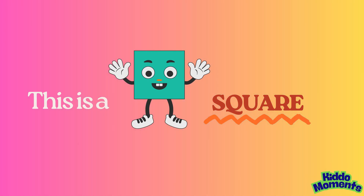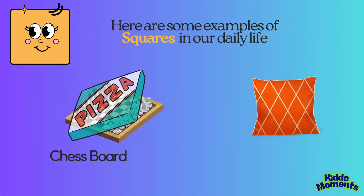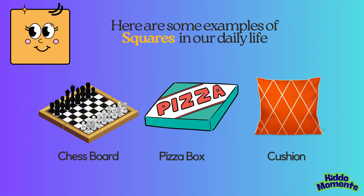This is a square. A square has four equal sides. Here are some examples of squares in our daily life.